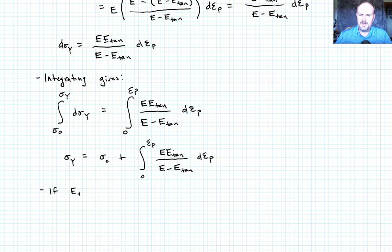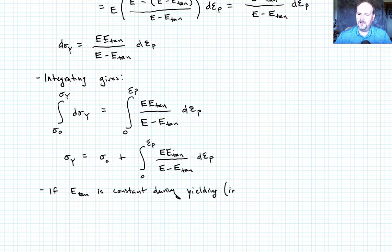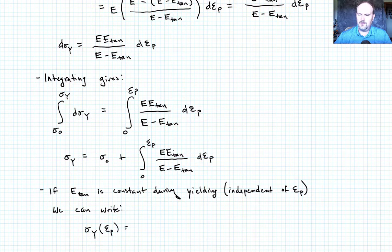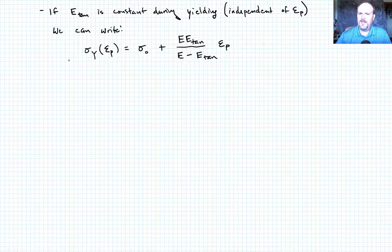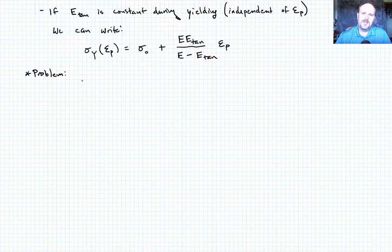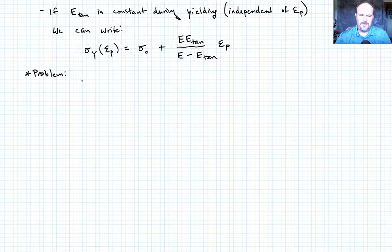This is the general result for a variable tangent modulus. But if E_tan is constant during yielding — meaning it's independent of the plastic strain — then we can pull that ratio out and write: sigma_y as a function of epsilon_p equals sigma_naught plus E times E_tan divided by (E minus E_tan) times epsilon_p. However, there's a problem: this equation would show a decrease in yield stress for a compressive strain. If epsilon_p became negative, we could achieve a yield strength less than the initial sigma_naught, which is not correct.